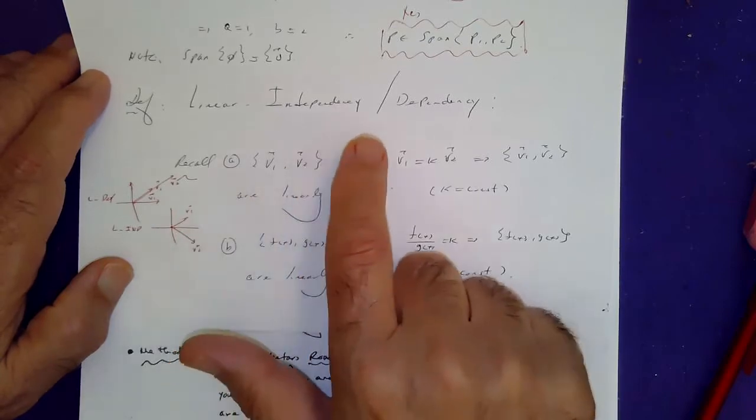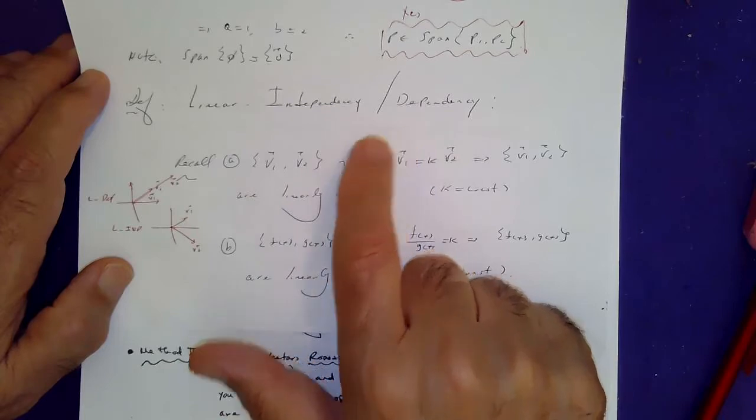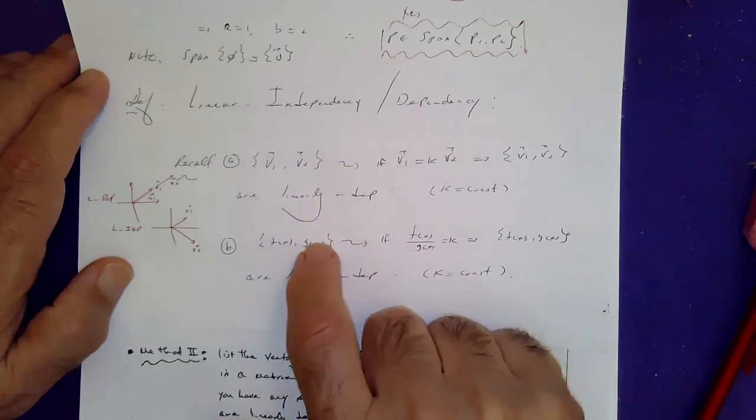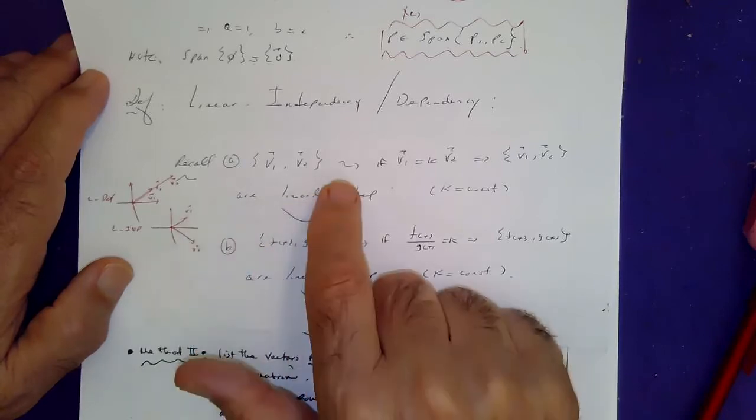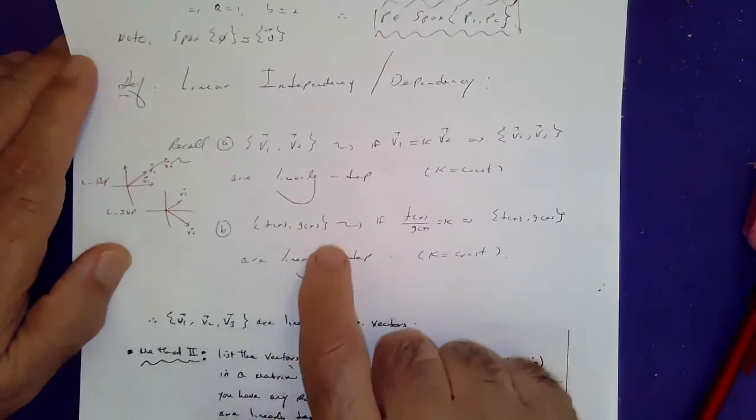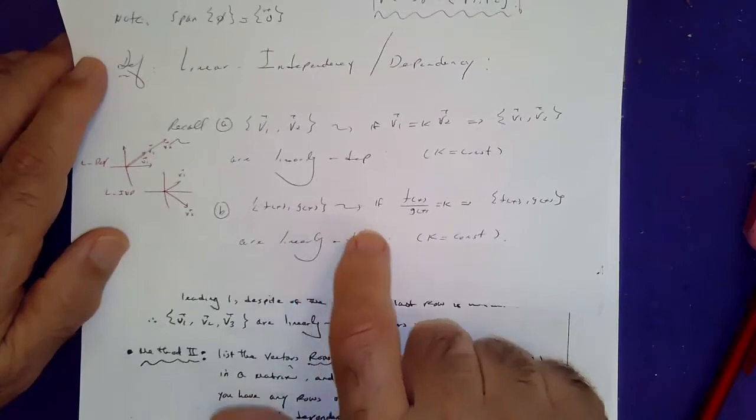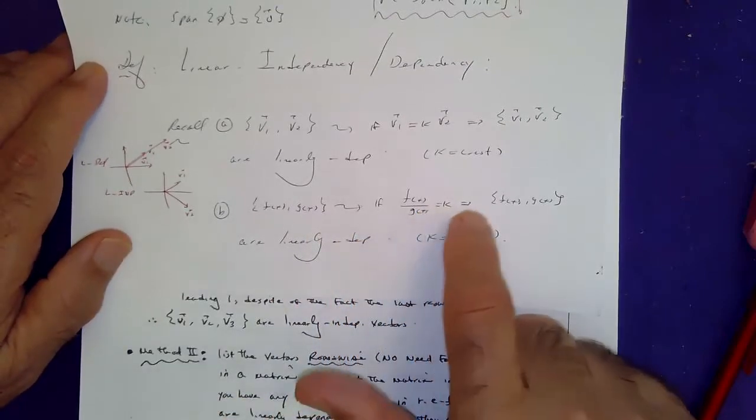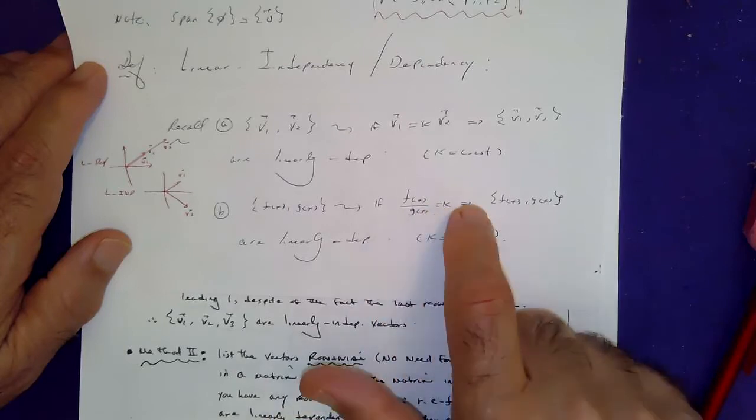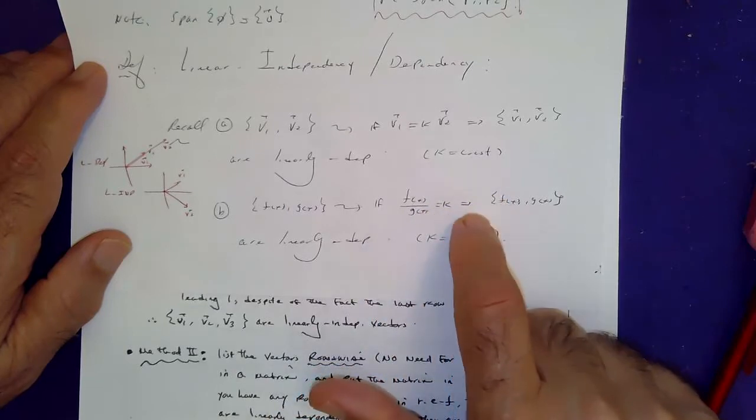The idea of linearly dependency and independency can be extended to functions, matrices, and so on. It is not just about vectors. If you recall, two functions are said to be linearly dependent if the ratio of the functions is constant. Otherwise, we would call them linearly independent.